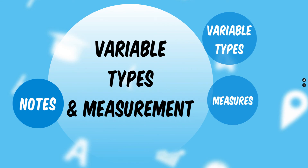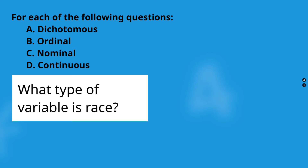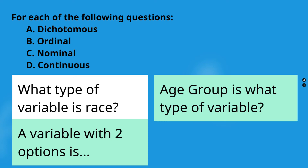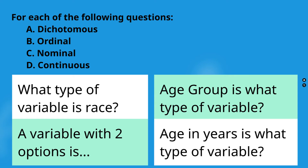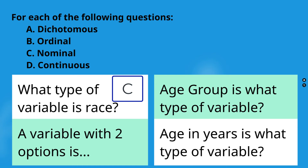What about variable types and measurements? For each of the following questions, note which type of variable it is: A for dichotomous, B for ordinal, C for nominal, or D for continuous. What type of variable is race? Race is a nominal categorical variable — the answer is C. There is no inherent order to the levels of race. Many variables can be collected in multiple different ways, so think carefully about how each is measured.